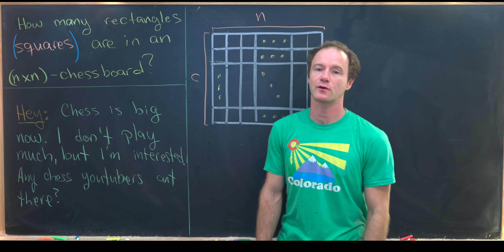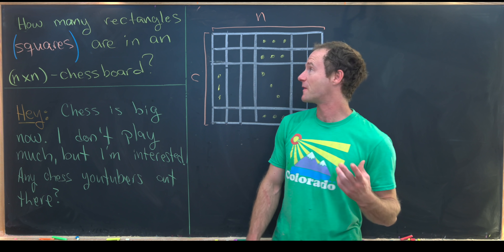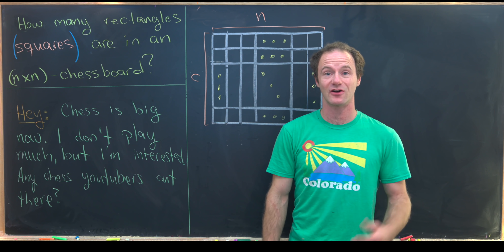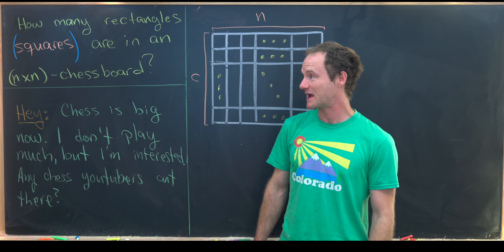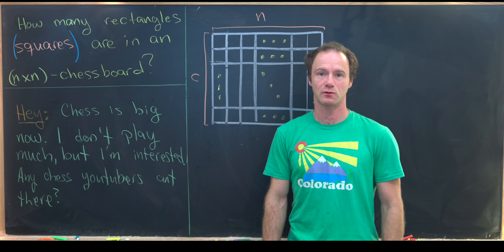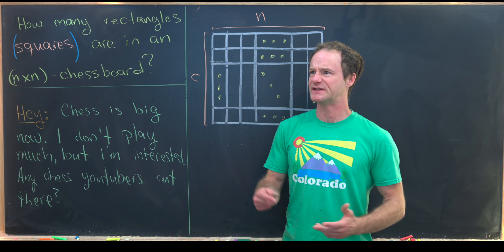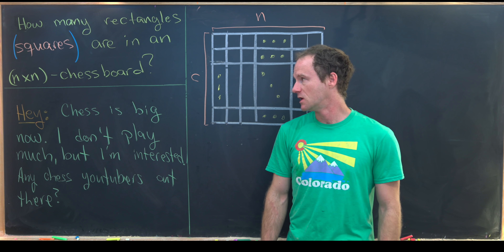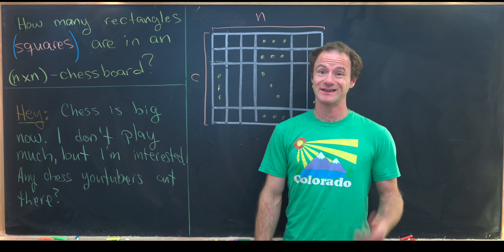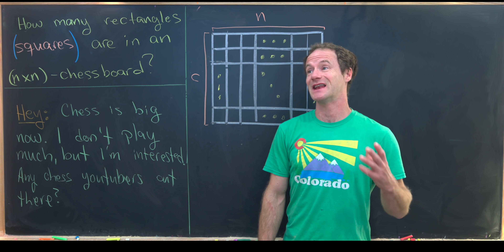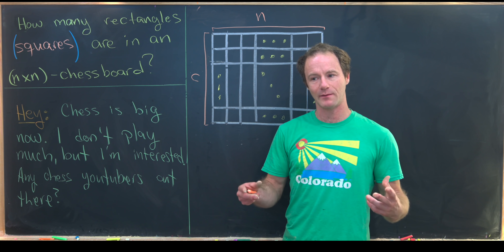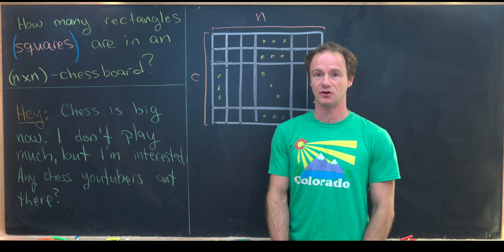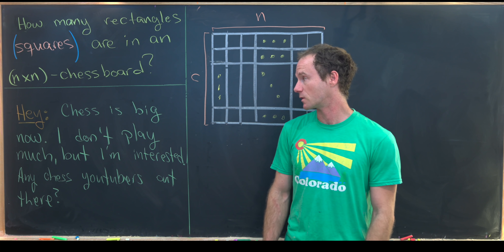Here I've got a nice combinatorial problem about the number of rectangles or squares that are in an n by n chessboard. Obviously if we solve this for an n by n chessboard, then it's fairly easy to just set n equal to 8 and we'll know how many squares or rectangles are present in a normal chessboard.